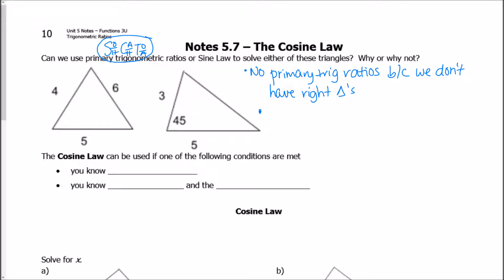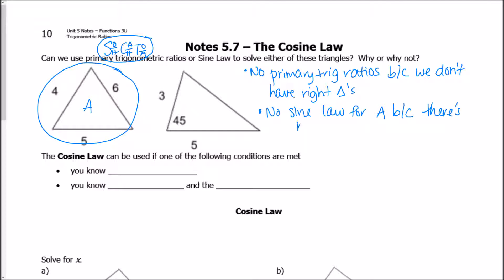Can we use the sine law? The sine law would only work if we have at least one angle. Looking at this triangle — we'll call it Triangle A — we don't have at least one angle. So no sine law because there's no angle.